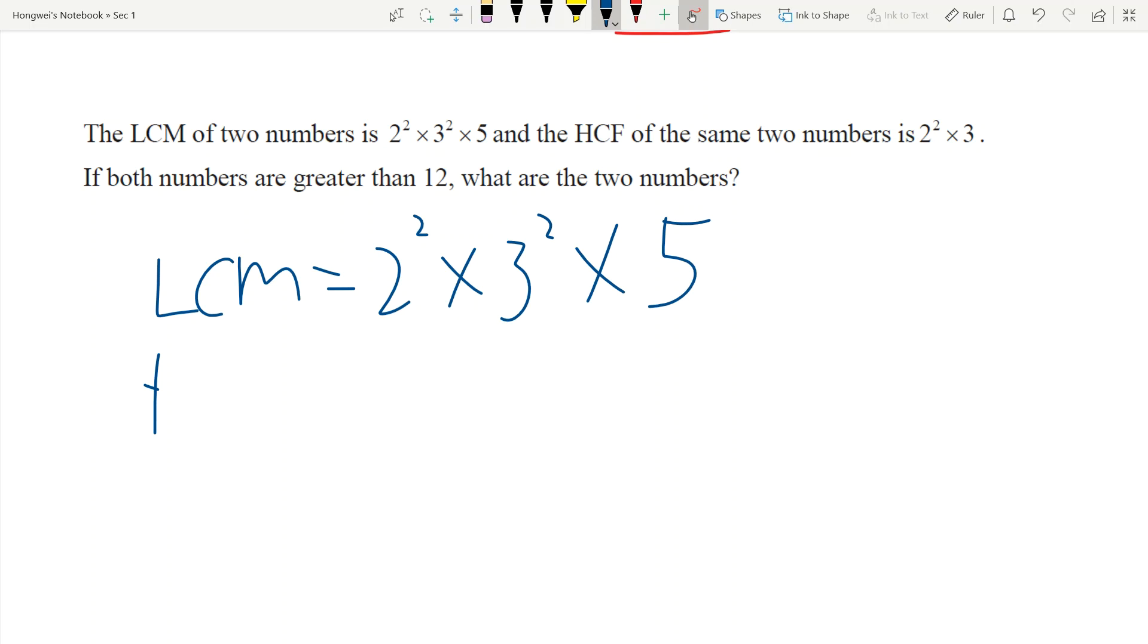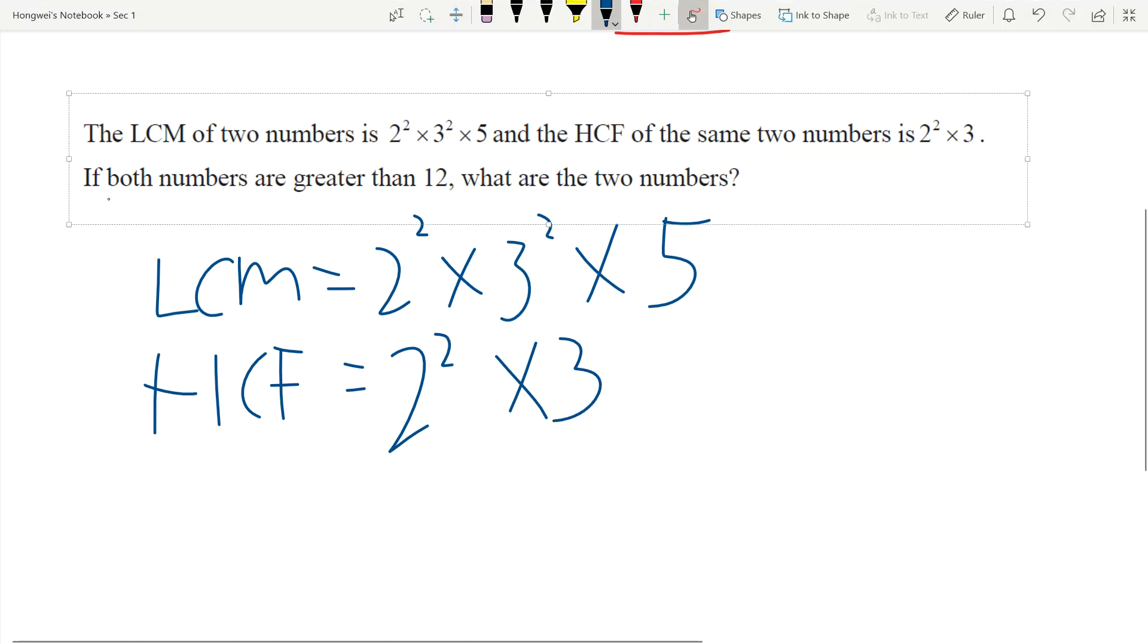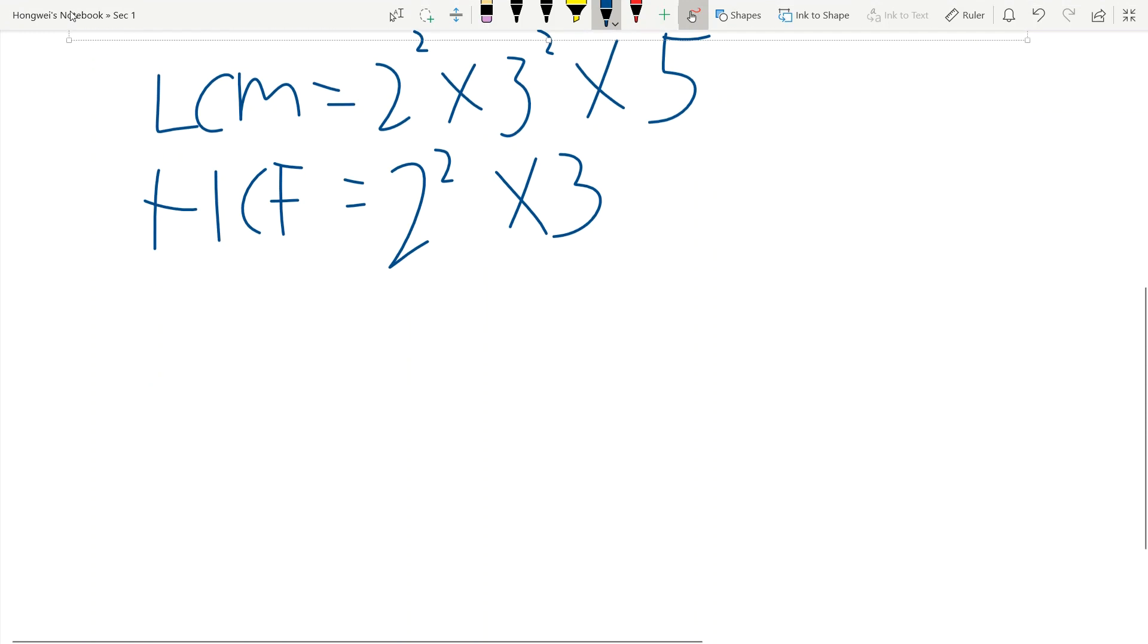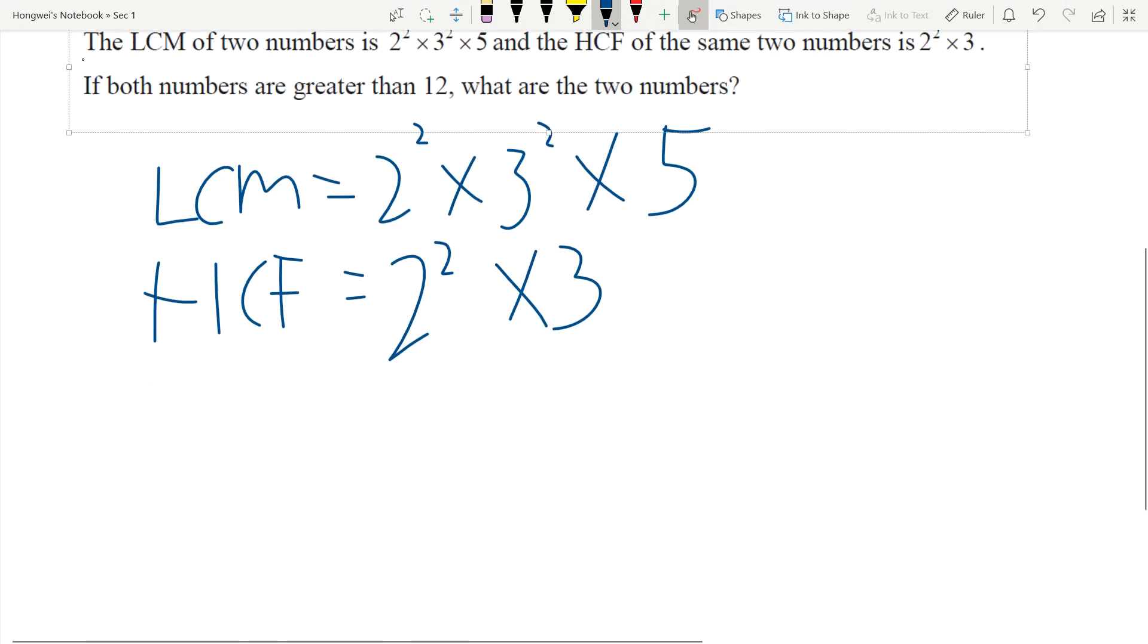And then the HCF is equal to 2² × 3. So now I need to find number A and number B. Now they give you a restriction: if both numbers are greater than 12, this is important information. So first I will write down A is this and B is this.